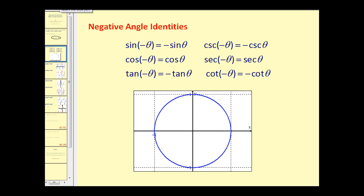Now let's take a look at the negative angle identities, and we'll take these two at a time. Sine of negative theta is equal to the opposite of sine theta. Cosecant of negative theta is equal to negative cosecant theta. Remember that sine and cosecant are just reciprocals of one another.